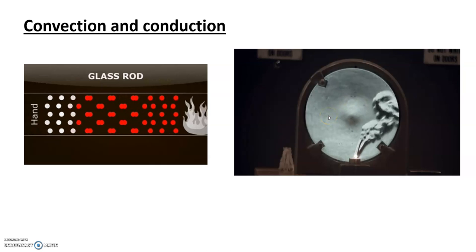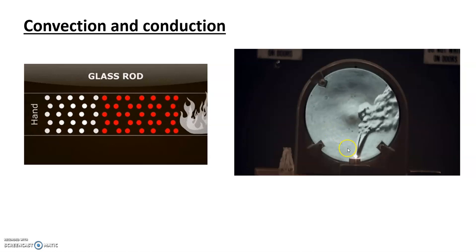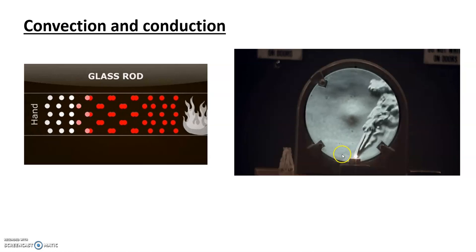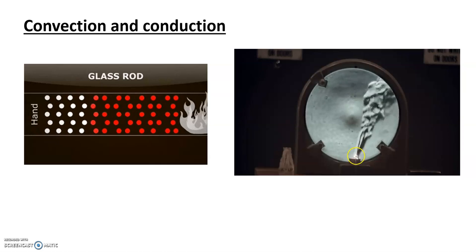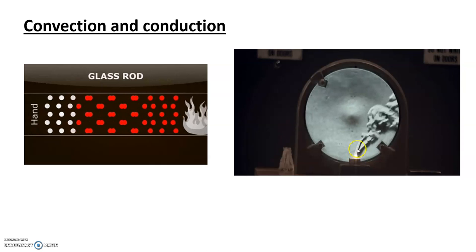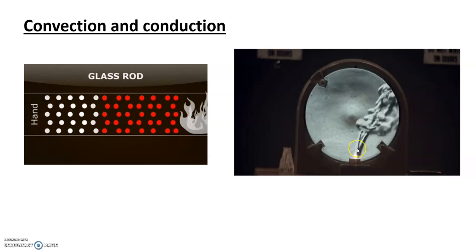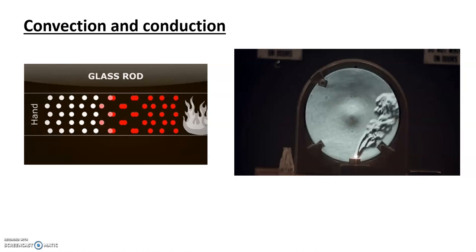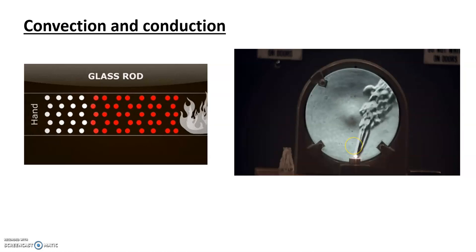Now, you need to be really careful with the language you use while explaining convection currents. Because it's very easy to fall into the trap of saying heat energy is transferred to the particles. The particles have more energy, so they get bigger. Which is not the case.